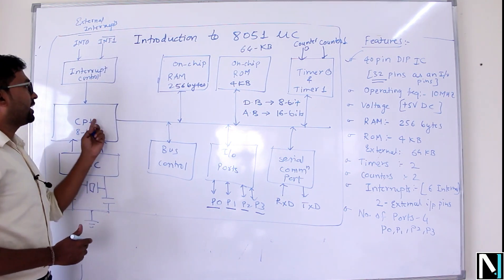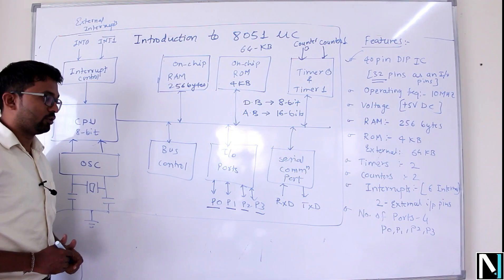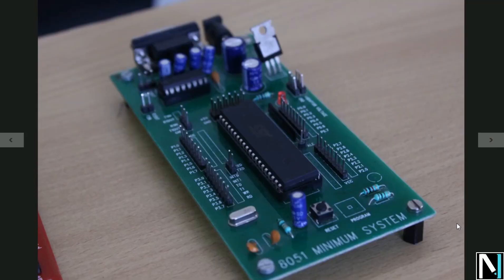As we are discussing the introduction to 8051 microcontroller system, I would like to share some information about this microcontroller IC. This is a 40-pin dual in-line package IC whose first pin starts from here while this is pin number 20. This is pin number 21 and this is pin number 40. You can see here a notch and one dot, so you start counting pins from here onwards.